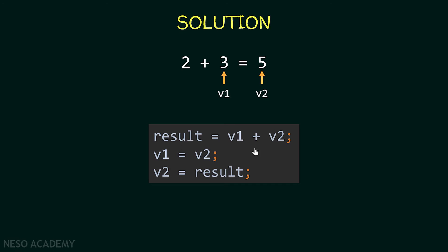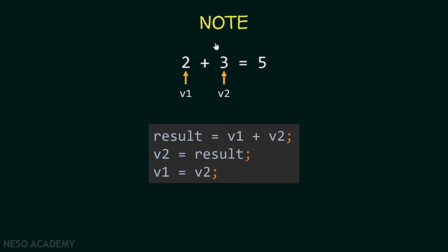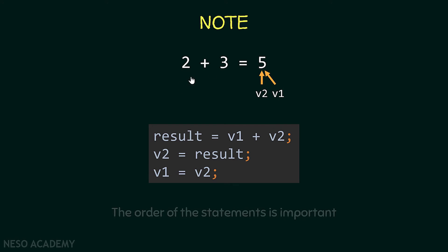The order of these operations is important. First, result=v1+v2 (e.g., 2+3=5). Then v1=v2, making v1=3. Then v2=result, making v2=5. If you did v2=result first and then v1=v2, both would become 5 and v1 would not equal 3. So the order of these statements matters.